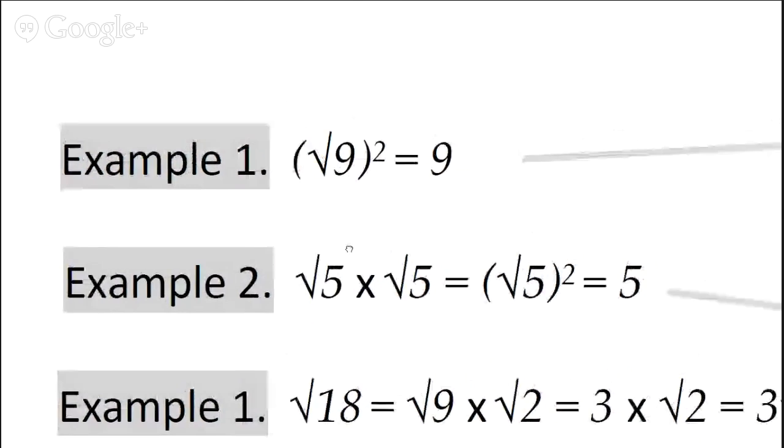Here's another example of the same thing. Square root of 5 times square root of 5 is equal to 5. And how do we get to that using the same trick? Square root of 5 times square root of 5 is the same as saying square root of 5 squared. And as we said before, square rooting and squaring are opposite. So the squaring gets rid of this square root and you're left with 5.